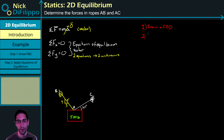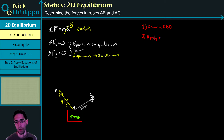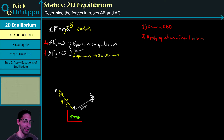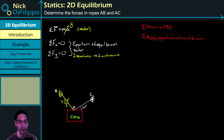Step two: we apply the equations of equilibrium. From these equations, we look at our X direction and our Y direction. I'll typically choose right to be positive and up to be positive, but this is a free choice. From the free body diagram, we gather everything in the X direction and everything in the Y direction, adding them if they're in a positive direction and subtracting them if they're in the negative direction.